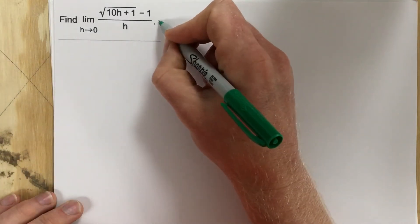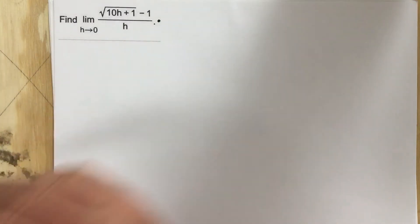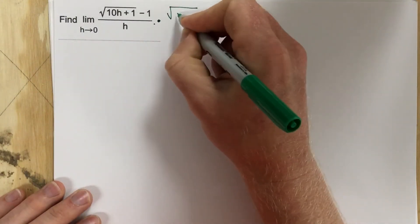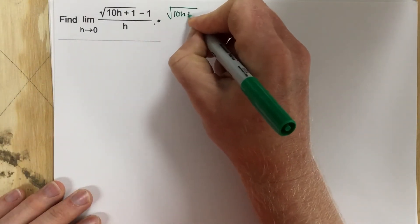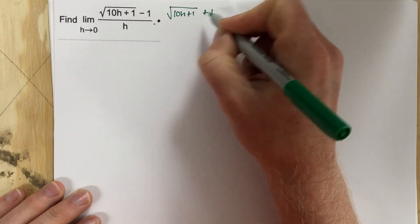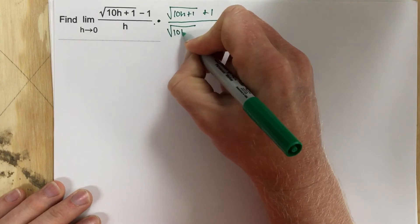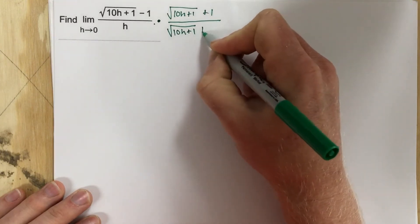So I'm going to multiply by root of 10h plus 1 plus 1 over root 10h plus 1 plus 1.